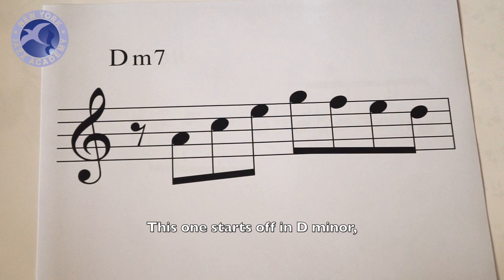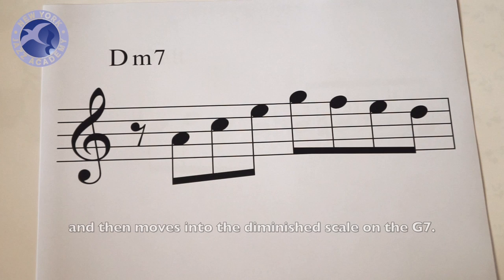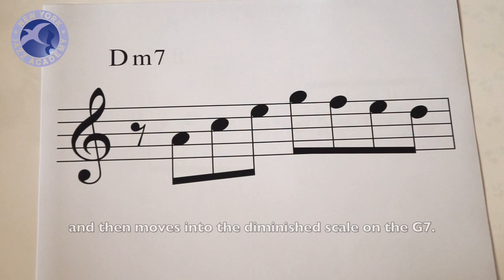I've got one more example. This one starts off in D minor using the D Dorian minor scale, and then moves into the diminished scale on the G7.